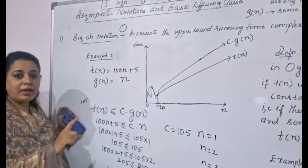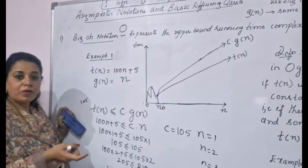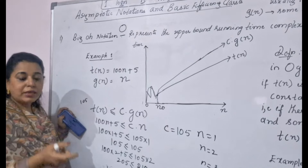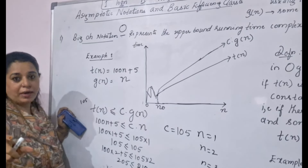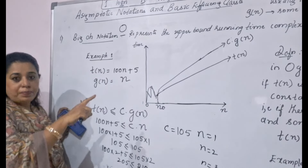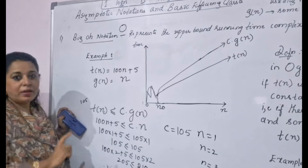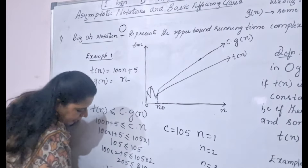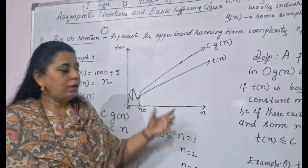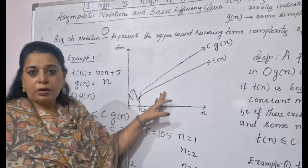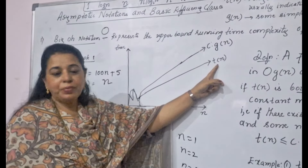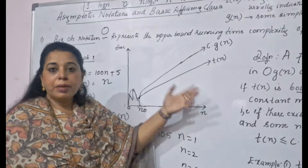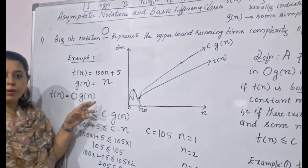In both examples we found that n = 1 onwards the equation is true. Sometimes for certain examples n = 1 may not work — then change it to n = 2 and try. Once n = 2 works, check n = 3, 4, 5 — about 3 to 4 values continuously — to verify that your function c·g(n) is above t(n). For n = 4 in example 2: 405 ≤ 420, which also works. In Big O notation, always remember: c·g(n) will always be above t(n).